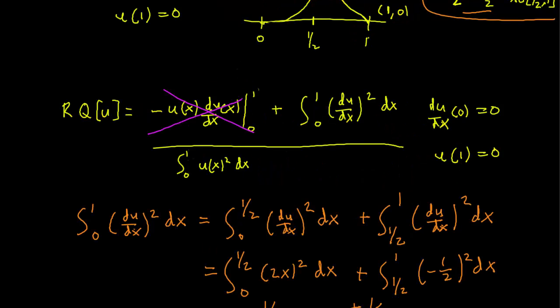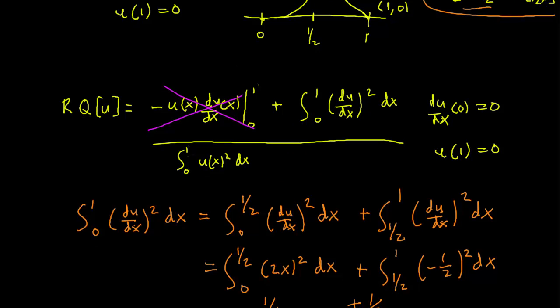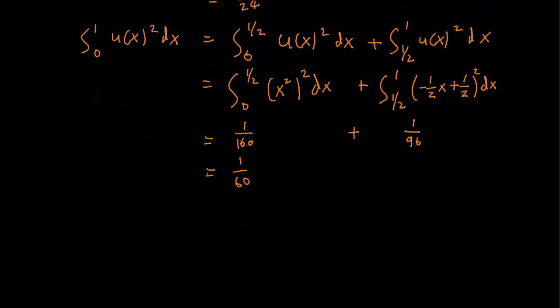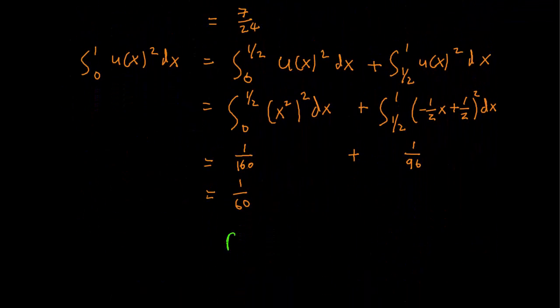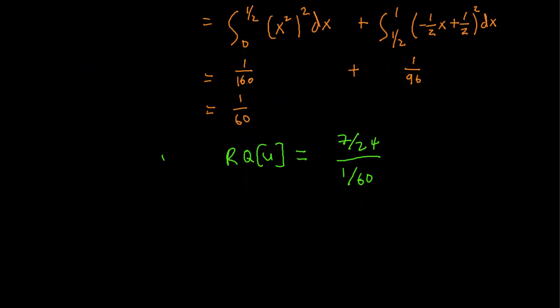When we look again at our Rayleigh quotient, we find that our Q(u) has 7/24 in the numerator and 1/60 in the denominator. This will be our upper bound for our lowest eigenvalue. We have showed that our lowest eigenvalue is roughly 17.5.